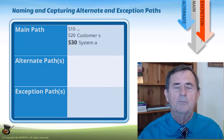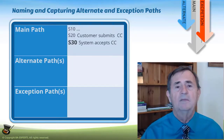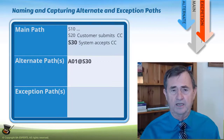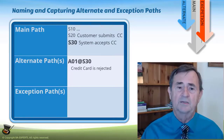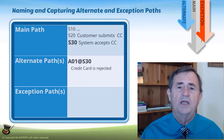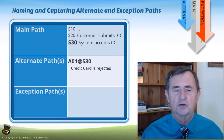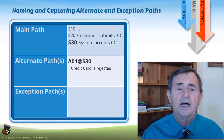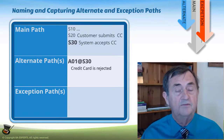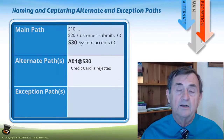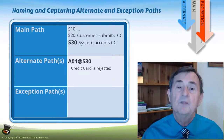For example, if a customer submits a credit card and my alternate path is recognized at S30 — if a credit card is rejected — instead of the system approving the payment, it's going to reject it. The at convention (@) is a shorthand way of capturing where the process deviates. The alternate path ID, the place where it deviates from the standard or from a prior alternate, and the circumstances under which it happens — those three pieces of information are in the name of the alternate path. You can even have alternate steps deviating from an alternate path.